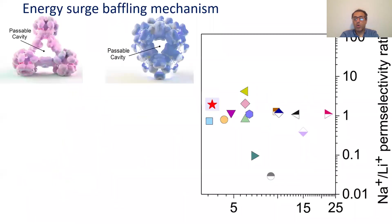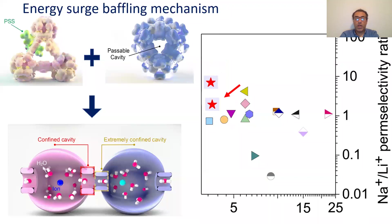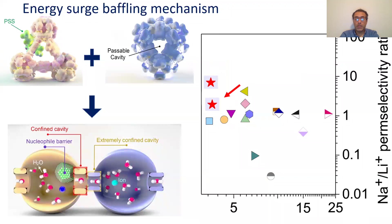Our recent third-generation membrane showed an astonishing lithium-ion selectivity. We managed to fuse two different nanochannels to make an asymmetric pore with altered energy walls — and you can see the selectivity before and after nanochannel fusion. In the next step, we added a specific ion trapper right next to the mouth of the pore, which boosted our lithium-ion selectivity even further. I hope this work will be online soon.